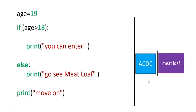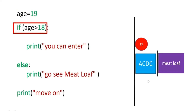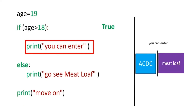For the case where the age is 19, we set the value of the variable age to 19. We check the if statement — the statement is true. Therefore, the program will execute the statement to print 'you will enter'. The program skips the expressions in the else statement and continues to run the rest of the expressions.